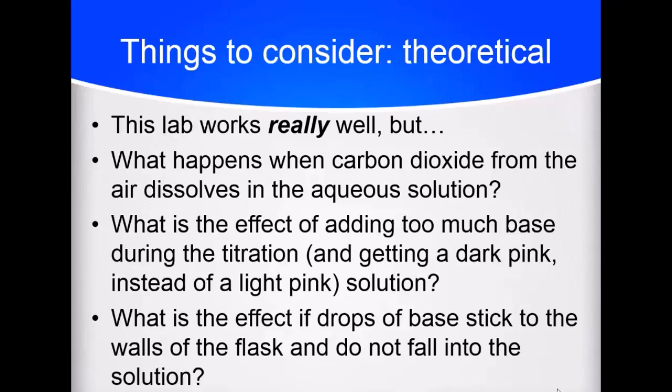If you add too much base, and you get a dark pink indicated solution instead of a light pink. How does that impact the amount of acid that is apparently in your solution instead of the amount of acid that's actually in your solution? What if the base doesn't actually go into the flask, if it sticks to the side of the flask, or if you spill it outside the flask? And you keep going until it turns pink. But not all of the base went into the solution. What's that going to do to your apparent concentration of acid?